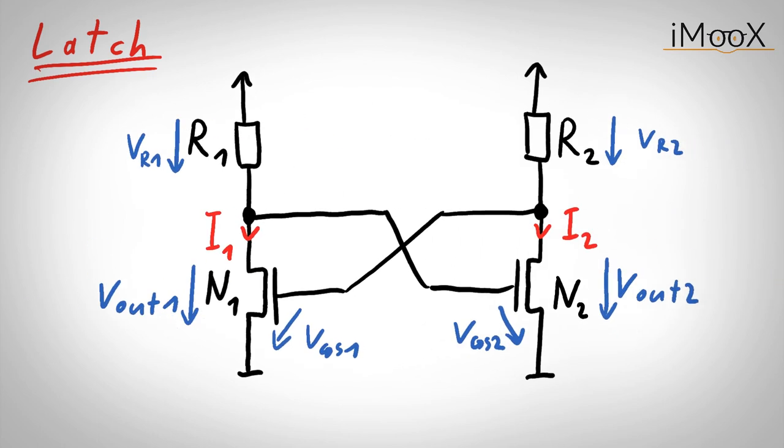However, now we can examine what happens if one voltage changes slightly. Let us assume that Vout1 increases, then the gate source voltage of transistor 2 increases too, leading to a higher current I2 and to a higher voltage of a resistor R2. As the supply voltage is constant, voltage Vout2 decreases, which leads to a decrease in gate source voltage of transistor 1, and therefore to a lower current I1 and a lower voltage of a resistor R1. This again leads to an increase of voltage Vout1. What we have just shown is a positive feedback loop, meaning if we perform a small action in one branch, this action is amplified further.